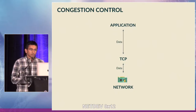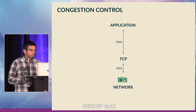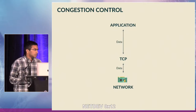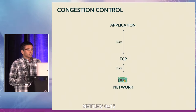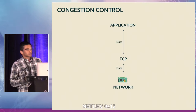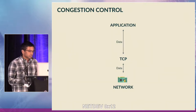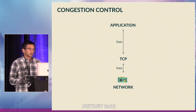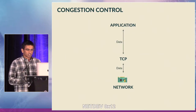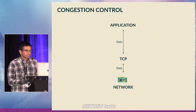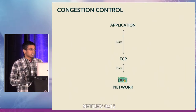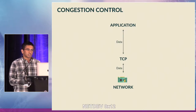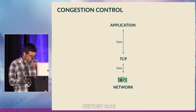You have your application, and you send your data to TCP, and completely transparent to you, TCP is running some congestion control algorithm — whether it's BBR, Cubic, or PCC Vivace — and that's how it decides when to send your data to the network.